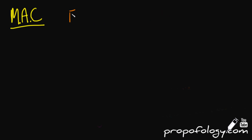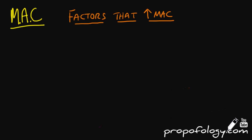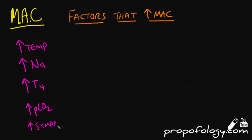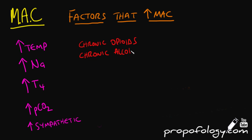There are also factors that can increase your MAC, meaning you need more volatile anaesthetic agent to achieve a MAC of 1. These include hyperthermia, sympathoadrenal stimulation, chronic alcohol abuse, and chronic opioid abuse. Increases in ambient temperature can also increase your MAC. Hypercapnia, decreasing age, and thyrotoxicosis also contribute to an increasing MAC. Some of these are literally the opposite of factors that decrease your MAC.